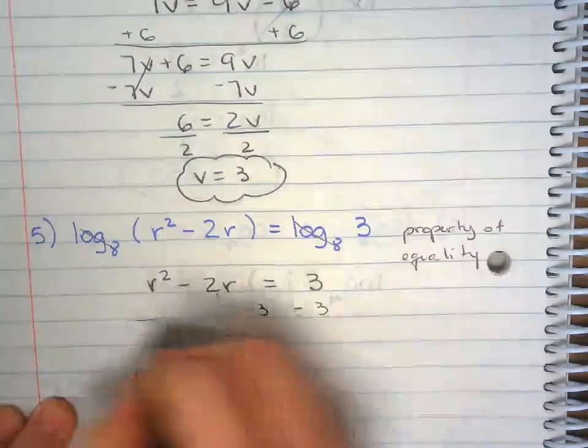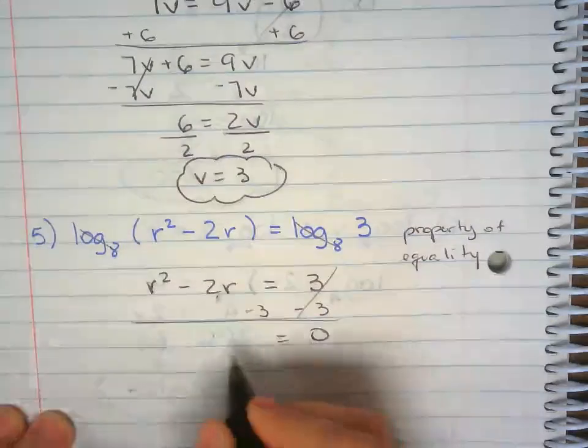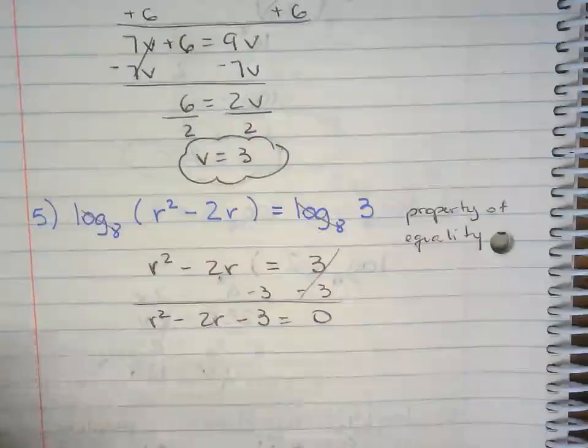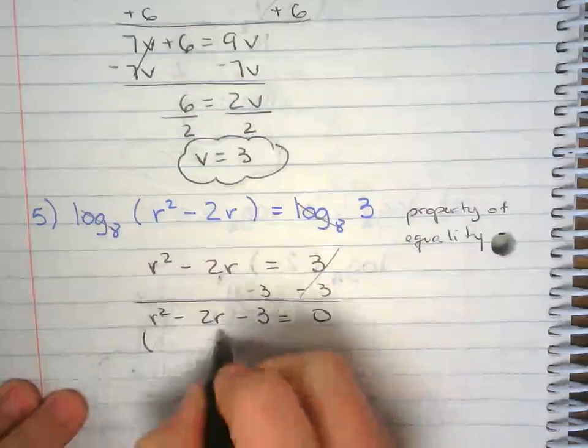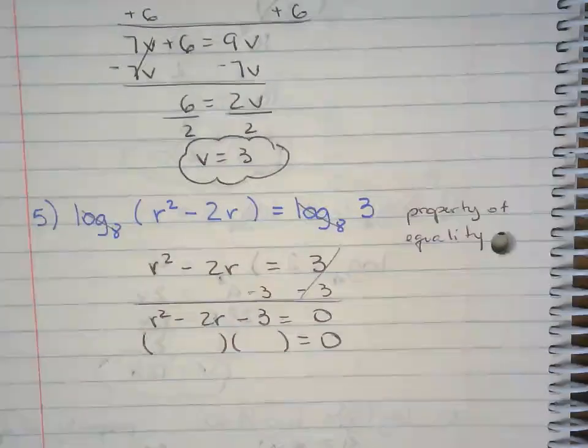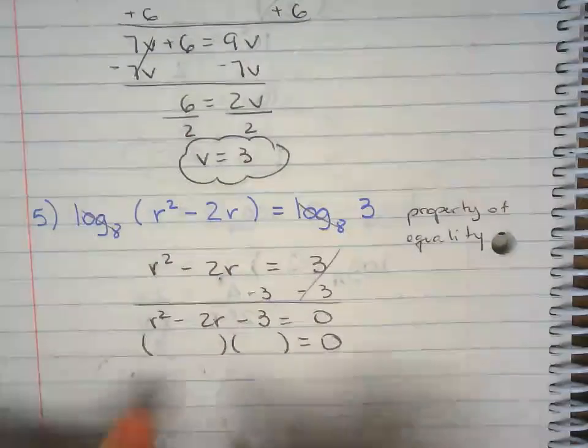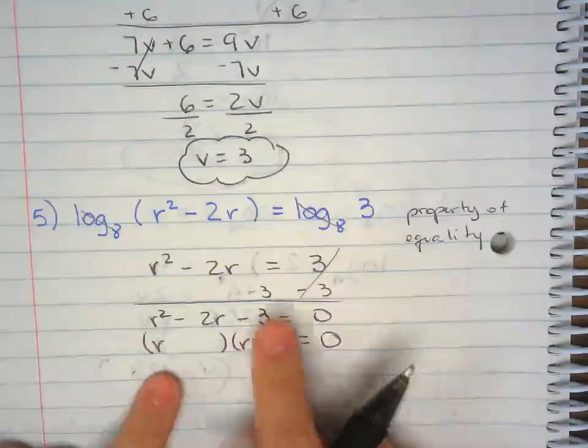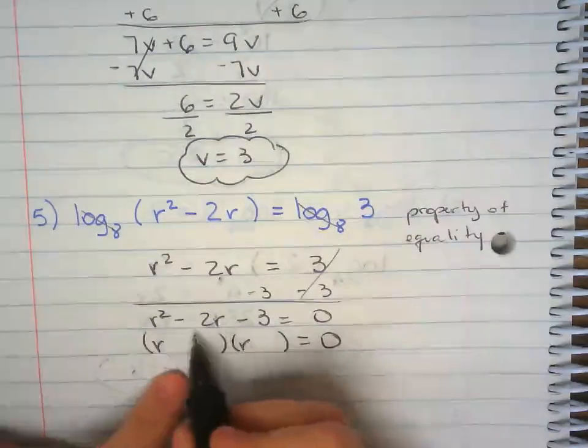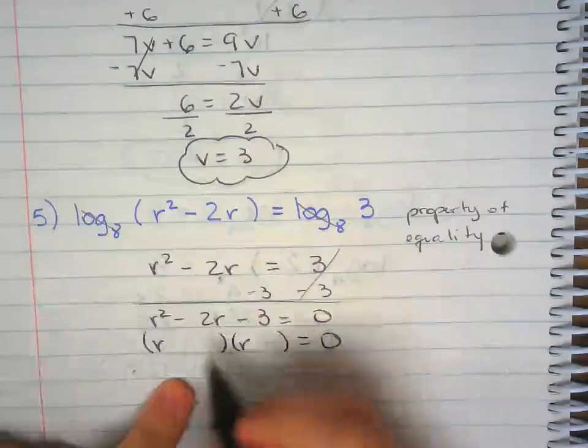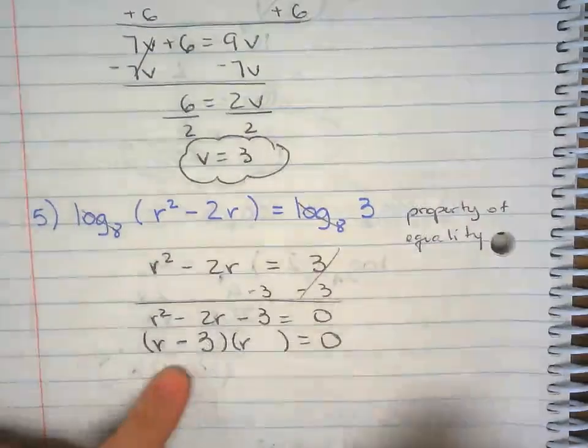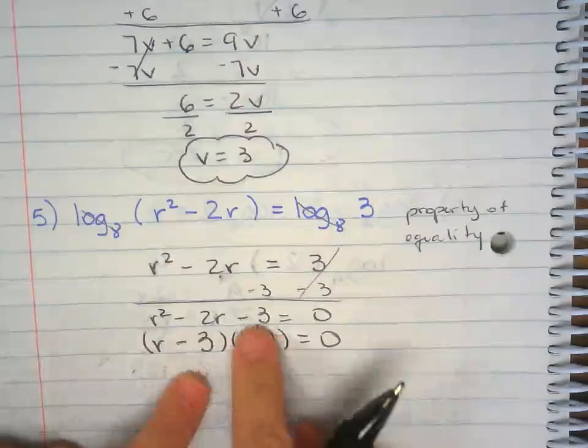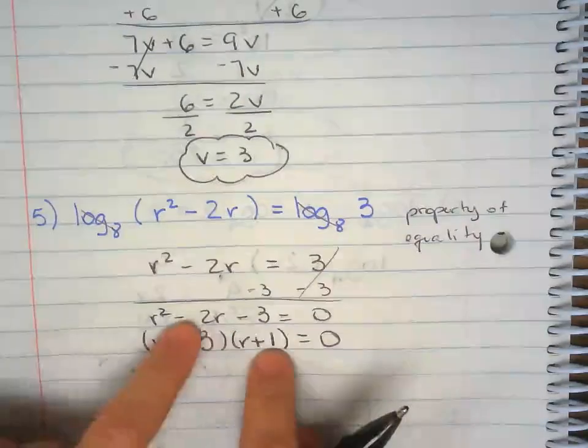Minus 3 from both sides. Because this is a quadratic function, I'm going to solve by factoring. Factoring is way easier than the quadratic formula here. Two numbers that multiply to negative 3 are 3 and 1. To add to negative 2, make the 3 negative, then plus 1. Negative 3 times 1 is negative 3. Negative 3 plus 1 is negative 2.